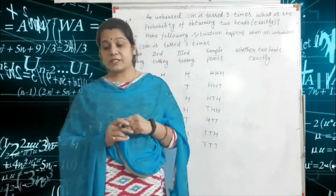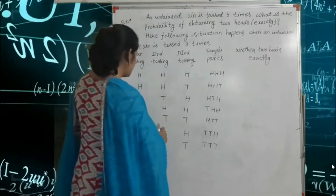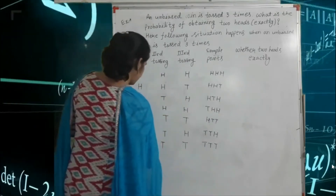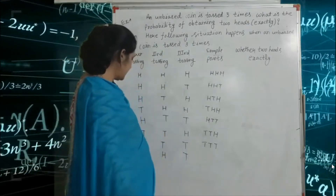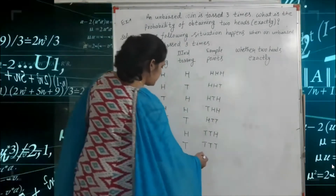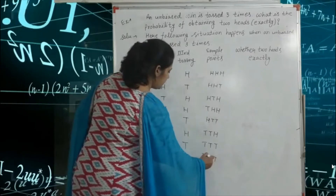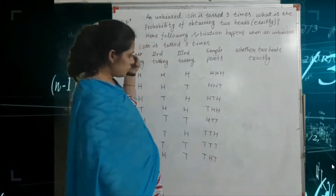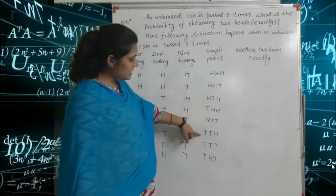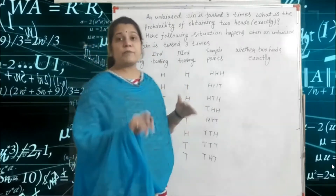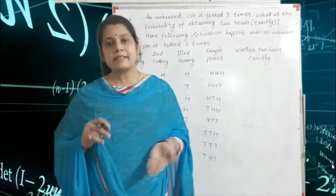The next one is tail, head, tail — THT. So this gives us the structure: one, two, three, four, five, six, seven, eight possibilities when a coin is tossed three times.